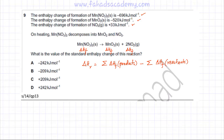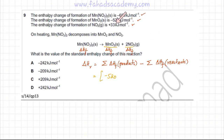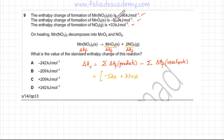Starting the calculation, the products are MgNO₂ and NO₂. The enthalpy change of formation of MgNO₂ is minus 520 kJ/mol. Be very careful with the signs. The other product is NO₂, but there are two NO₂ molecules. The enthalpy change of formation of NO₂ is plus 33 kJ/mol, so for two NO₂ molecules, we multiply that by 2.